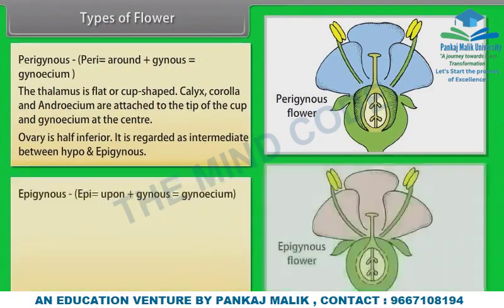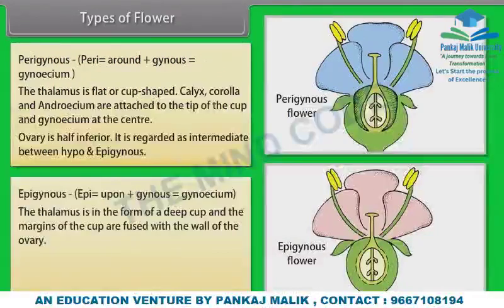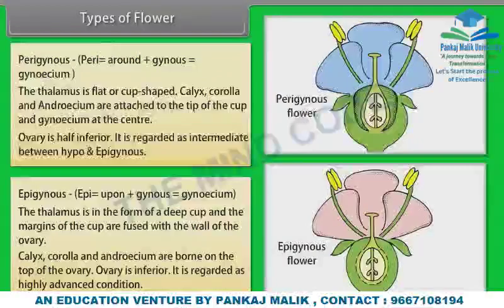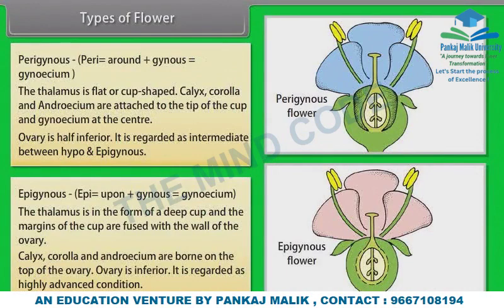Perigynous condition is regarded as intermediate between hypo and epigynous. In Epigynous flowers, the thalamus is in the form of a deep cup and the margins of the cup are fused with the wall of the ovary. Calyx, corolla and androsium are born on the top of the ovary. Ovary is inferior. It is regarded as a highly advanced condition.